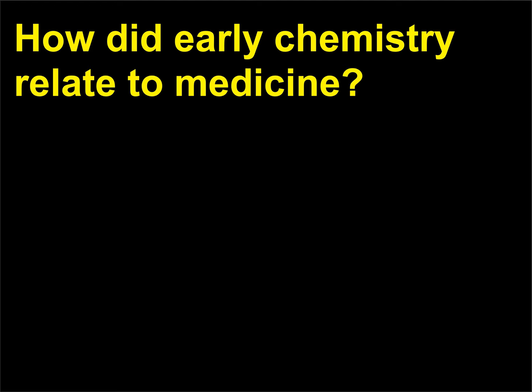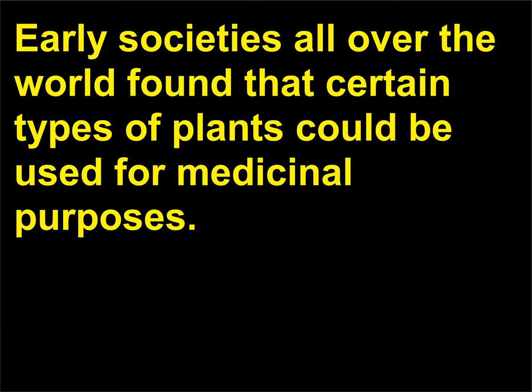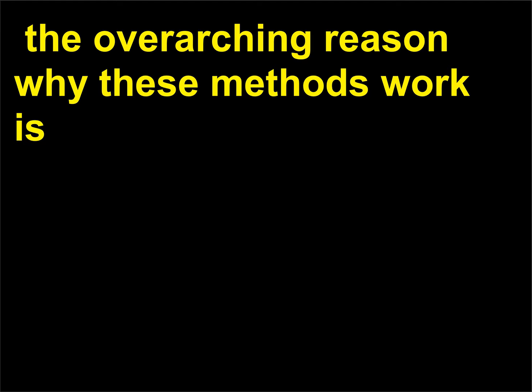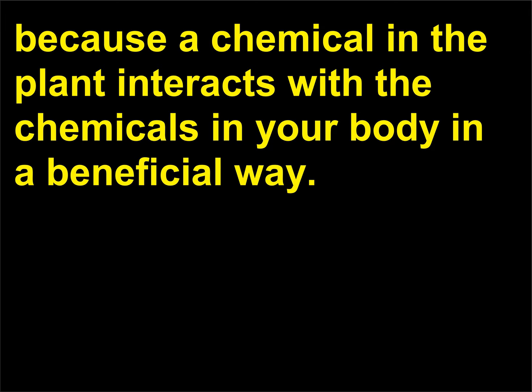How did early chemistry relate to medicine? Early societies all over the world found that certain types of plants could be used for medicinal purposes, though only relatively recently have people attempted to gain a detailed understanding of the chemistry behind these methods. The overarching reason why these methods work is because a chemical in the plant interacts with the chemicals in your body in a beneficial way.